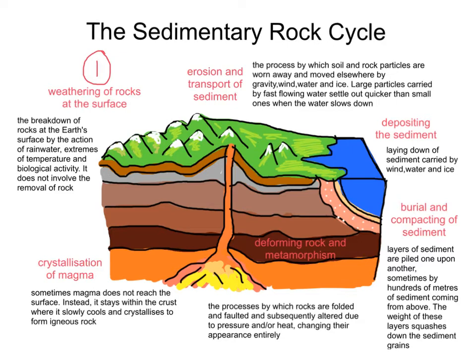Weathering of rocks at the surface is driven by the action of rainwater, extremes of temperature, and biological activity. It does not involve the removal of rock material, and that's key to mention. Water can enter crevices in rock, and when ice forms, those crevices can expand, causing breakages and pieces to fall off — that's an example of physical weathering. So too is when rock is put under stress when made to expand in heat and contract in the cold. If a rock is continually expanding and contracting repeatedly — hot during the day, cold at night — it's more likely to weather. Wind can also cause loose particles to blast against rocks, weathering them.